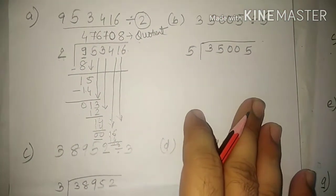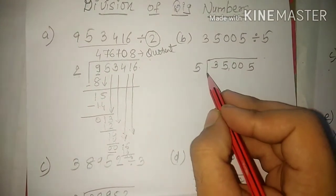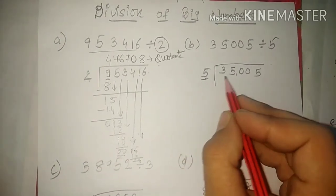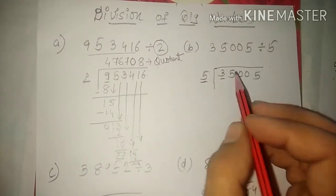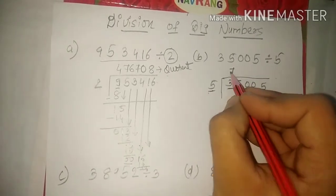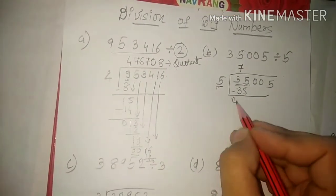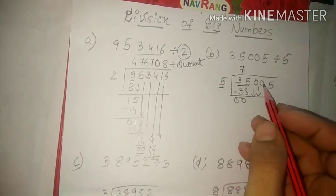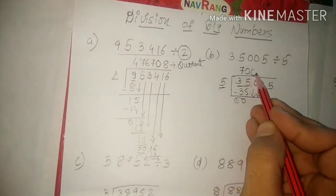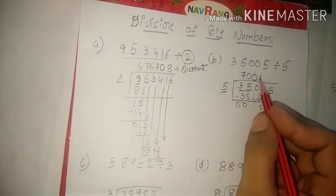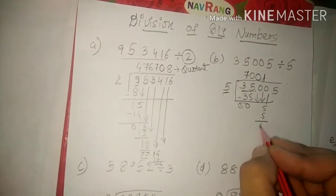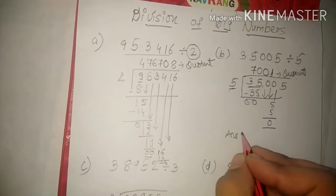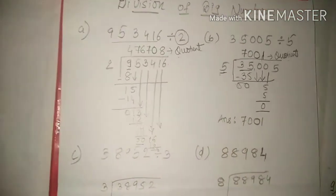Look here — this big number has to be divided by five. As I told you in the first sum, look inside for one digit since the divisor is one digit. Three cannot be divided by five, so divide thirty-five by five. Five sevens are thirty-five. Remainder zero. Now two zeros are remaining — since they are not divisible, those two zeros go up, and five ones are five. Your answer for this is seven thousand one.